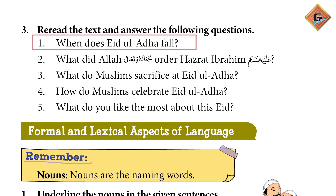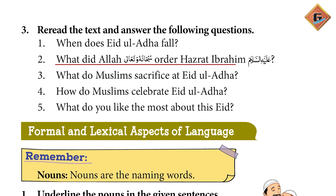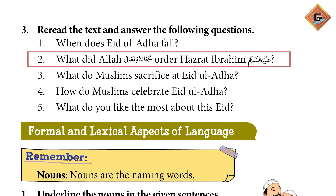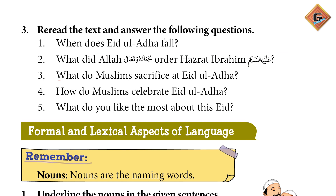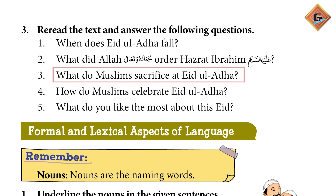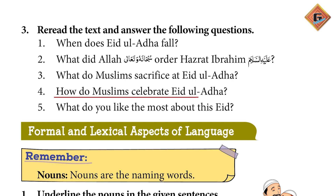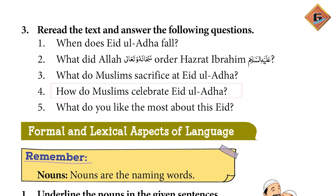When does Eid ul-Adha fall? Eid ul-Adha falls on the 10th of Zulhijja. What did Allah Subhanahu wa Ta'ala order Hazrat Ibrahim (AS)? Allah ordered Hazrat Ibrahim (AS) to sacrifice his son. What do Muslims sacrifice at Eid ul-Adha? Muslims sacrifice animals at Eid ul-Adha. How do Muslims celebrate Eid ul-Adha? They wear new clothes, say prayers, sacrifice animals, and enjoy a feast.